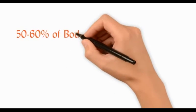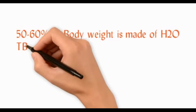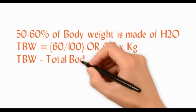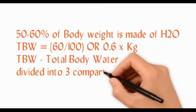60% of the body weight is made up of water. To calculate the total body water, 0.6 times the weight in kilograms will give you the TBW. The TBW is divided into three compartments.